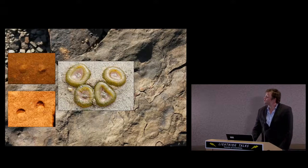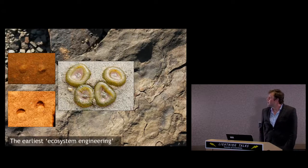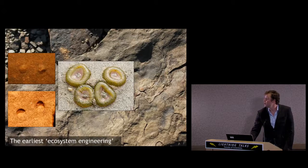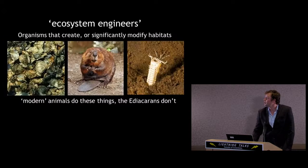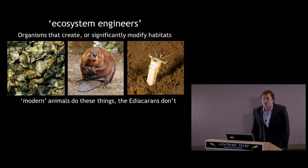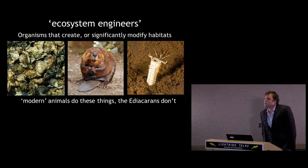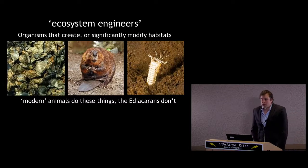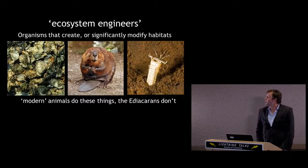It's also important because sea anemones, as filter feeders, are what we call ecosystem engineers — and these are the earliest ecosystem engineers. Ecosystem engineers are organisms that create, modify, or significantly change their habitat. I've got three examples up here.